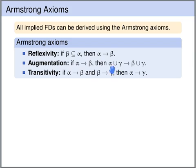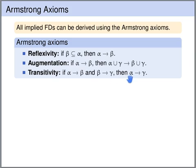Then we have transitivity — that's what we already saw. If we have alpha uniquely determines beta and beta uniquely determines gamma, then we may conclude that alpha uniquely determines gamma.